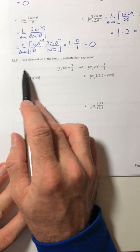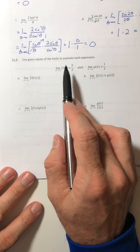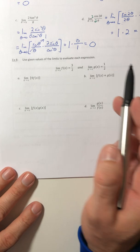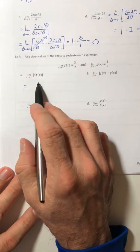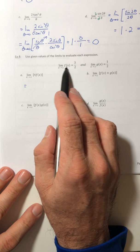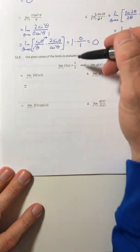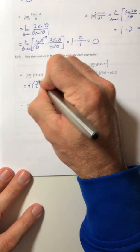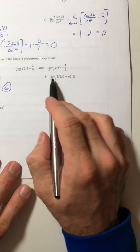Alright, this last one, now we're going to use the properties. So this time, you don't know what the function of F is or for G, but you know what their limits are. So we're just going to apply the properties straight to them. So the limit of F goes to three over two. So since it's got a four multiplied to F, just multiply four to the limit and you get six.